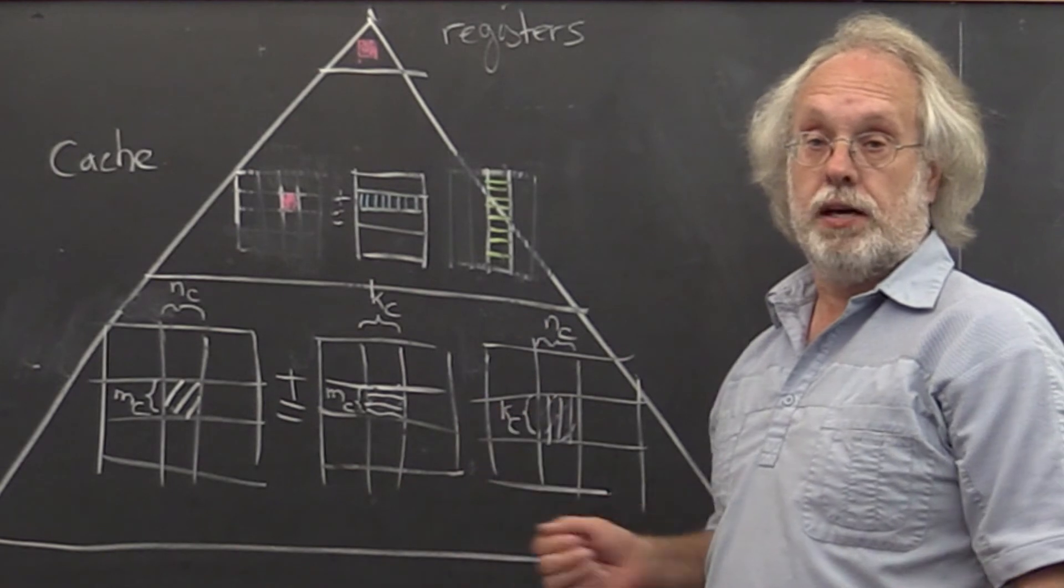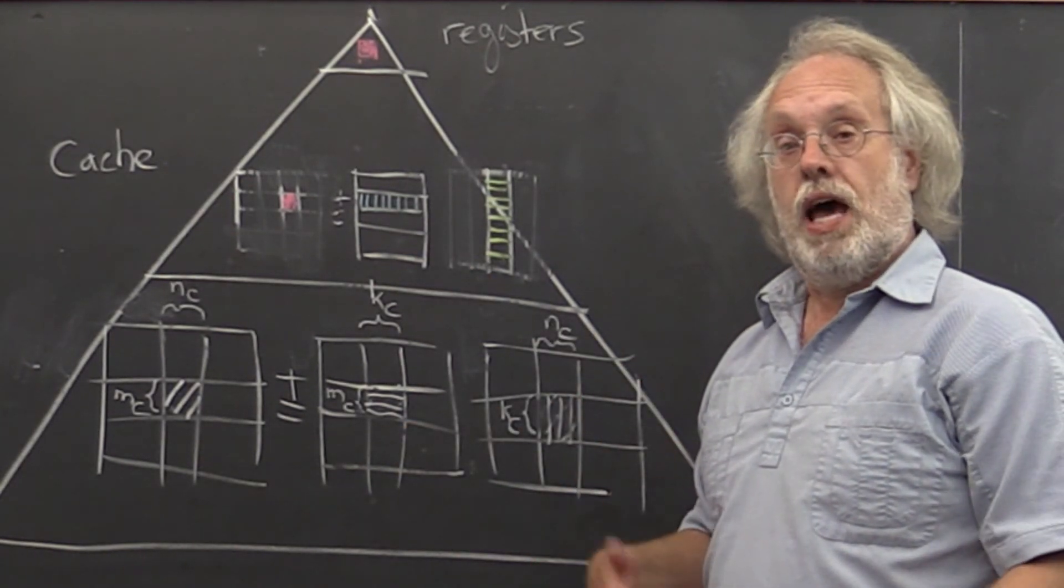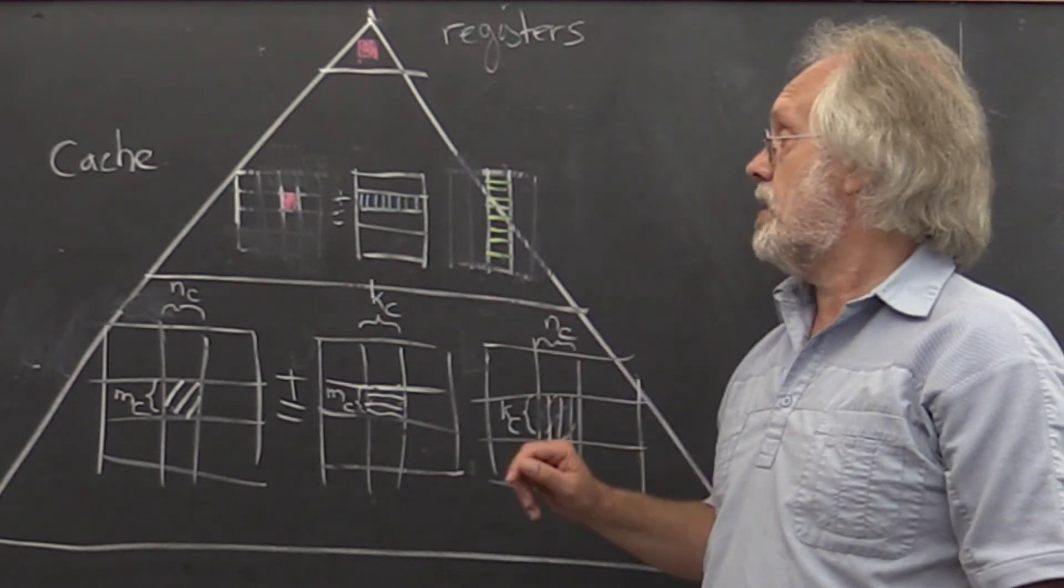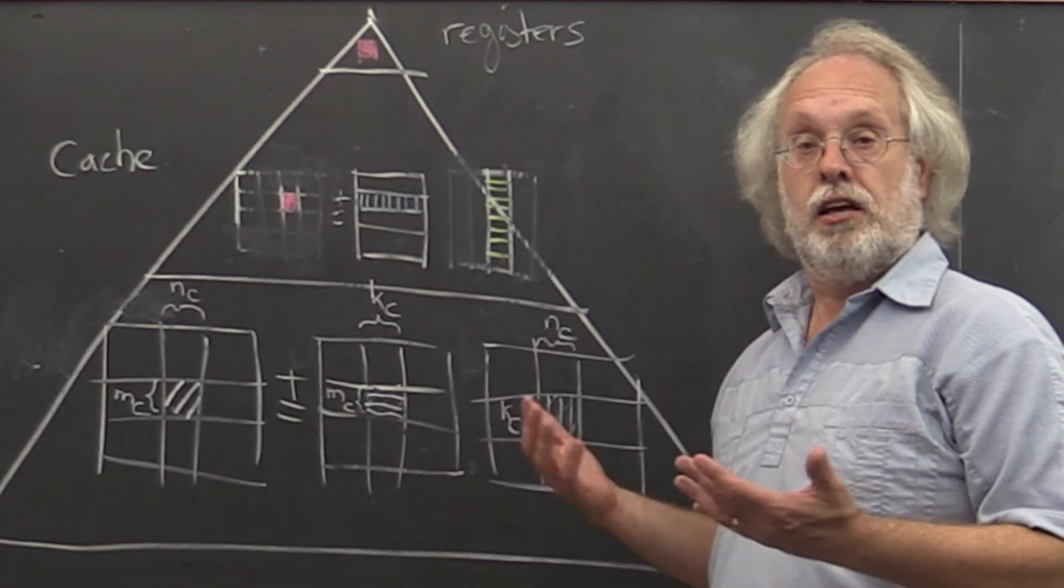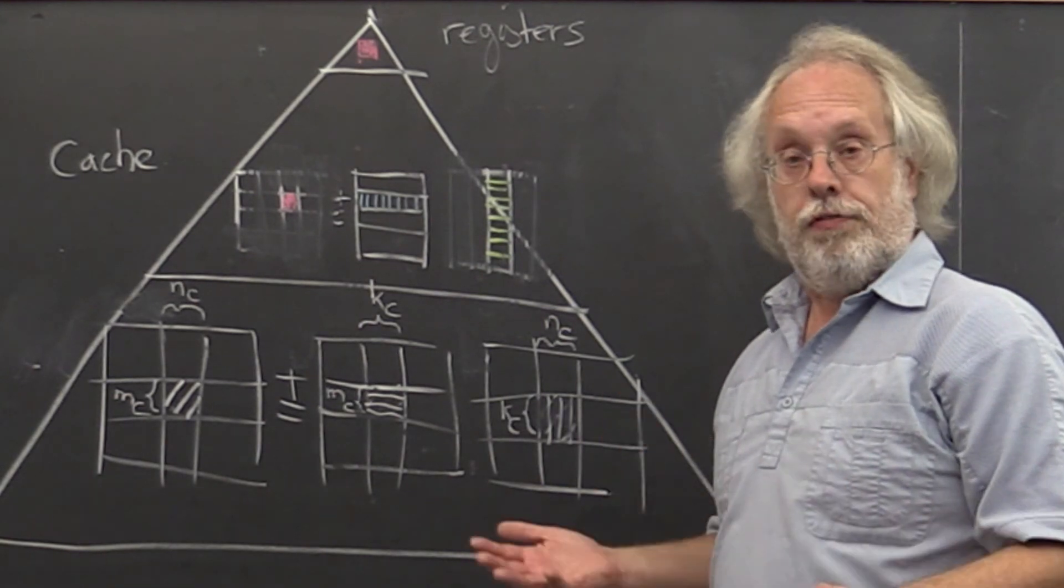That means that the block sizes that we have created here can be bigger. And if those block sizes can be bigger, then we amortize the cost of moving data from main memory into the cache over more computation. That B in the discussion in the last unit becomes bigger. And therefore, we should be able to attain better performance.